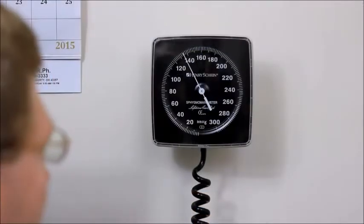You are now ready to measure the patient's blood pressure. Inflate the cuff to 20 to 30 millimeters of mercury above the pulse obliteration pressure. Then deflate the cuff at a rate of approximately 2 millimeters of mercury per second, while listening with the stethoscope for Korotkoff sounds.